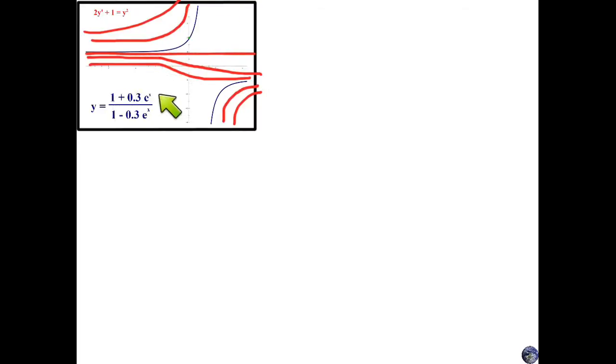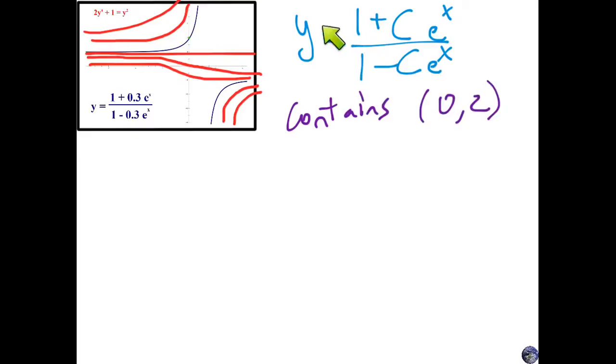I shrunk that previous video up to the corner here. What we want to do is find the equation of this particular solution that goes through this point 0 comma 2. Now remember, there was a whole host of other solutions to this general equation, but we only want one specific one. We want the one that goes through this point. So our y equation is y = (1 + ce^x)/(1 - ce^x), and we wanted to contain the point 0 comma 2. Another way you can see that written is some authors will say y(0) = 2. Either way you're saying the x is 0 and the y is 2.